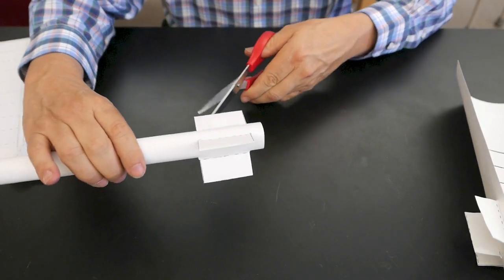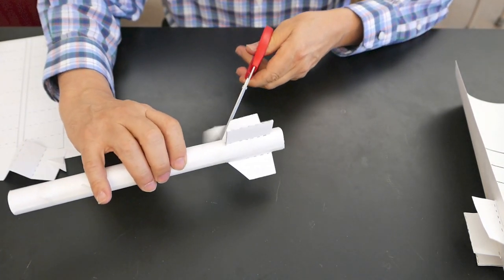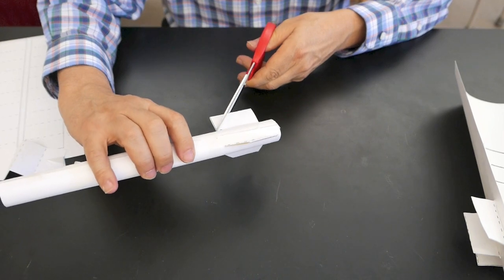Now I'm going to take some scissors and cut the fins so that they have an angle on it, just to make it look nicer. There we go. And three.